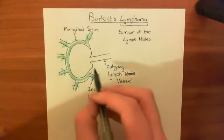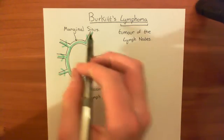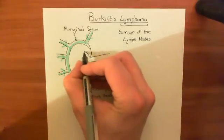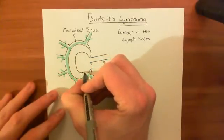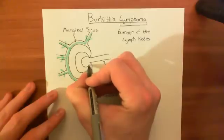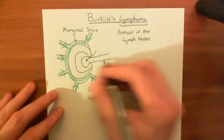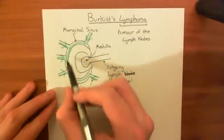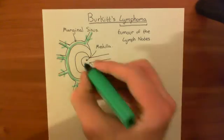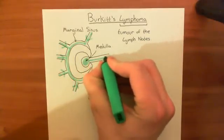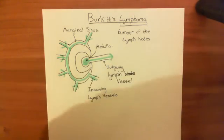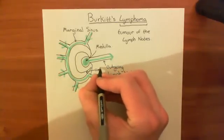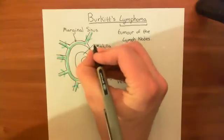More centrally within the marginal sinus is the cortex of the lymph node. And then inside the cortex you have something known as the paracortex. Right at the centre you have the medulla, which is connected to the outgoing lymph vessel. So for the lymph to go from the marginal sinus to the medulla, it has to pass through the cortex — the outer layer — and also through the paracortex, the inner layer.